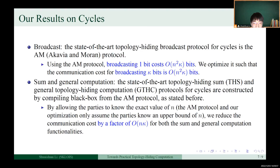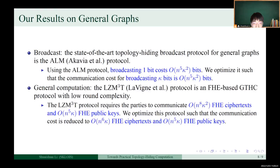The state-of-the-art topology-hiding sum and general topology-hiding computation protocols for circles are constructed by composing building blocks from the AM protocol. By allowing the parties to know the exact value of n, we reduce the communication cost by a factor of O(n·κ) for both the sum and general computation functionalities.